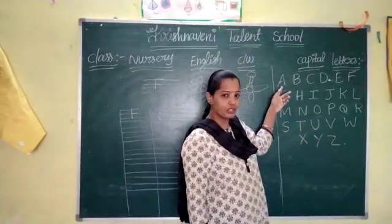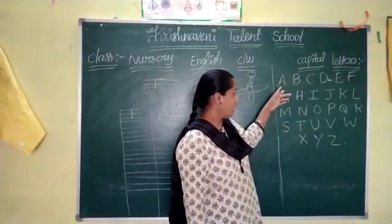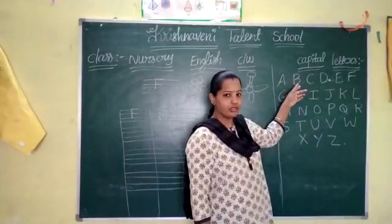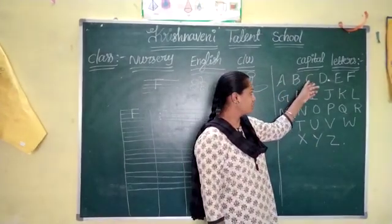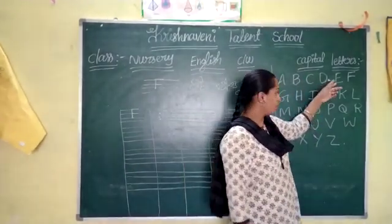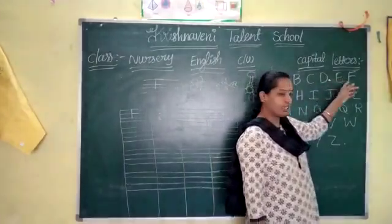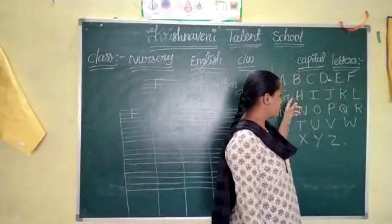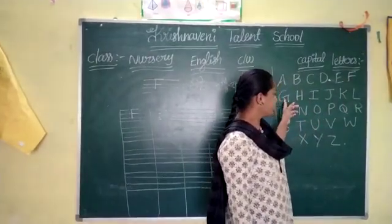Say F. Which of these do come? A for Apple, B for Ball, C for Cat, D for Dog, E — F for Fish.